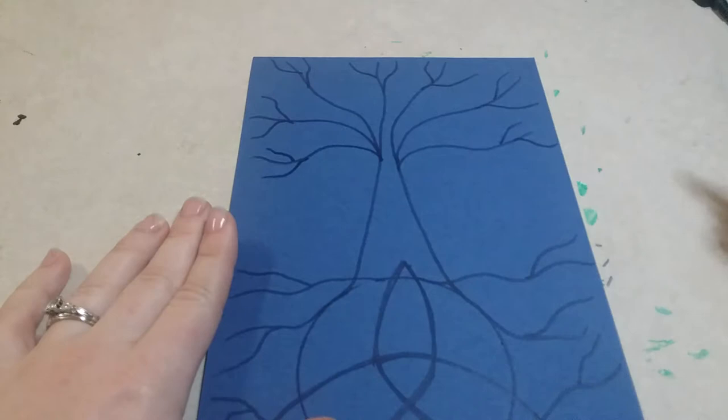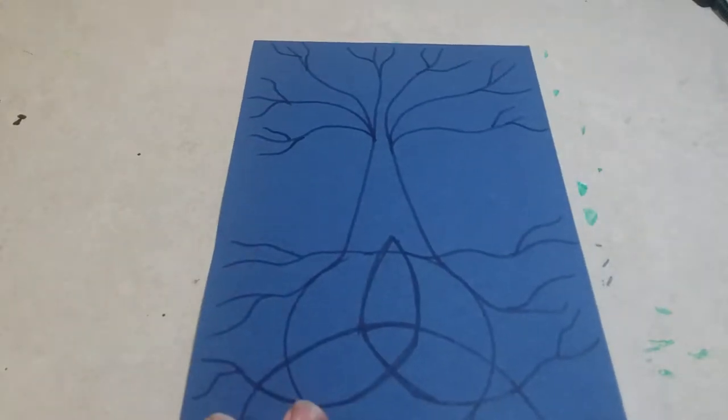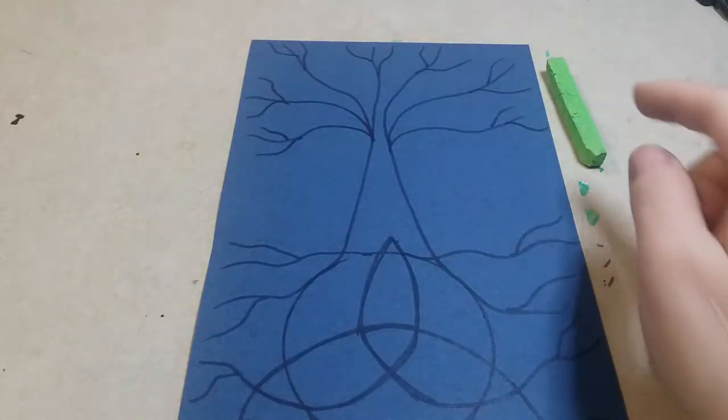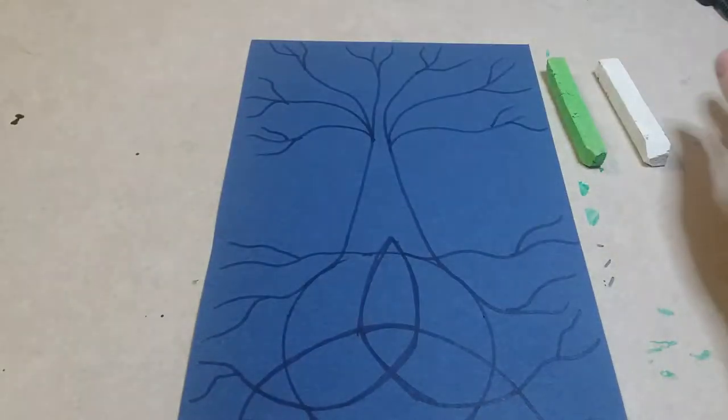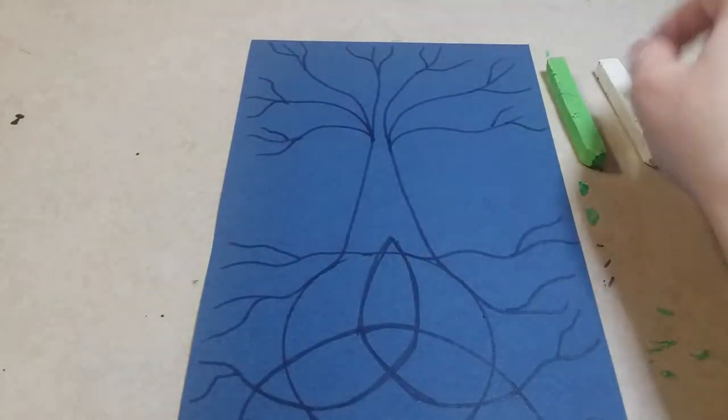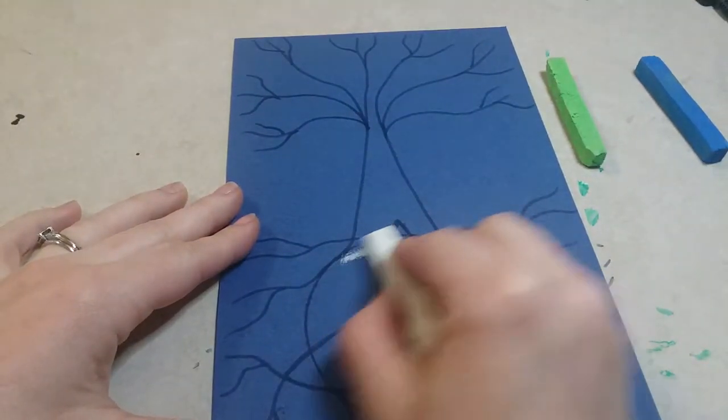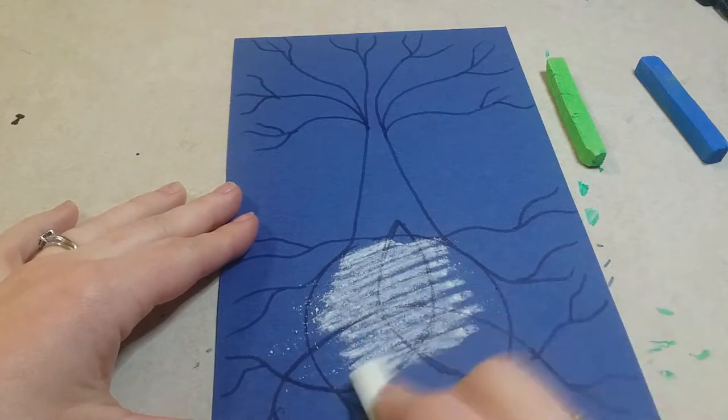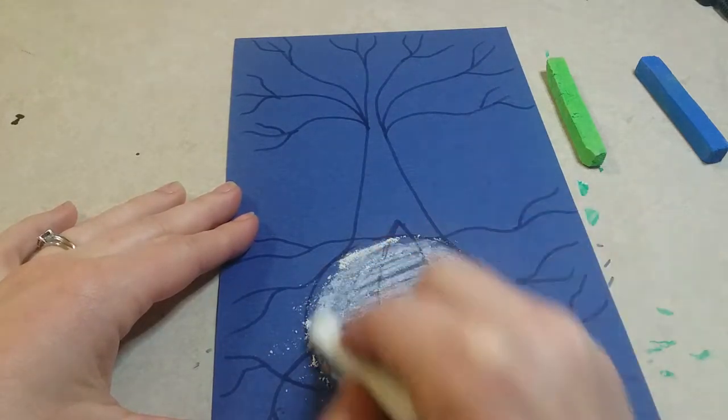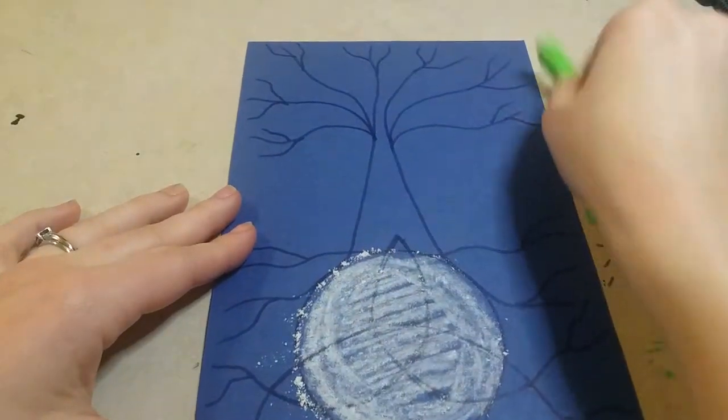Once we're done sketching all that out, we're ready to start with the chalk. You guys are gonna get some bright green chalk pastel and some white chalk pastel and also some blue. With the white you are going to fill in that circle, and then with the light green you're gonna kind of make like a doorway shape.